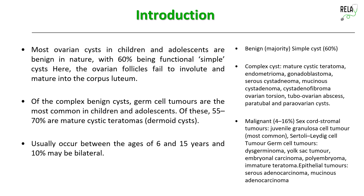There can also be malignant cysts — somewhere around 4 to 16%. When thinking of malignant tumors, the classification is easy to remember if you know the normal histology of the ovary. They can be sex cord stromal tumors, germ cell tumors, or epithelial tumors arising from the epithelial lining of the ovary. Epithelial tumors can be serous or mucinous — the benign ones are adenomas, and the malignant ones are adenocarcinomas.